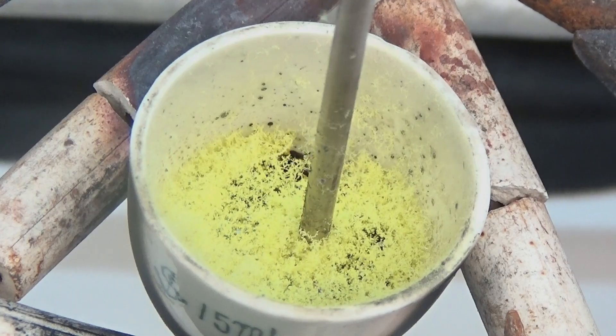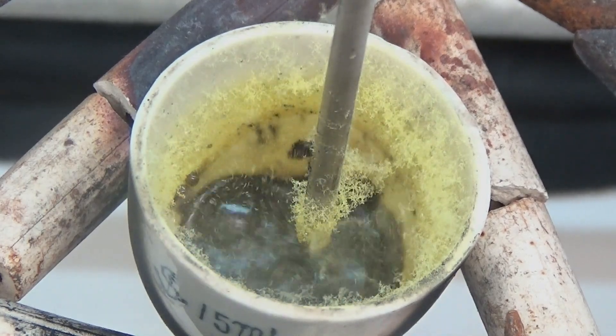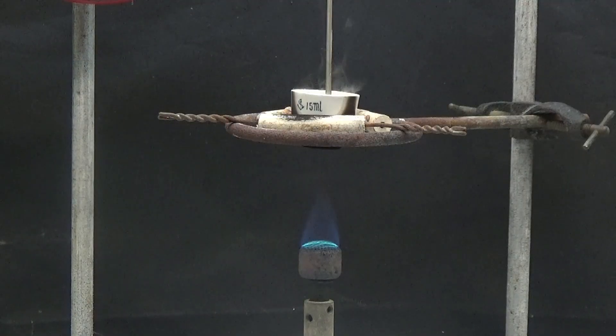When acridone is heated in a crucible, it is observed to sublime with yellow color. The yellow color is the original color of acridone. One way to purify the acridone would be by sublimation.